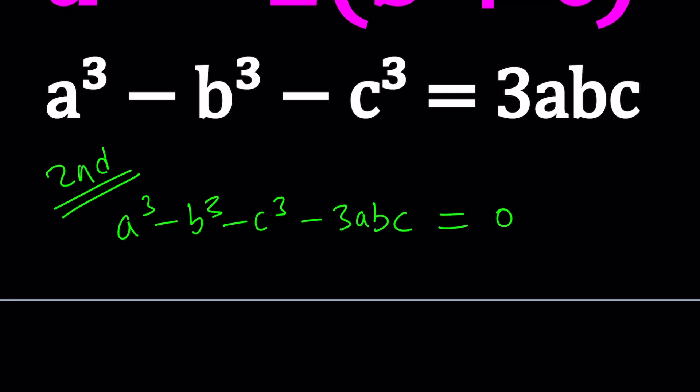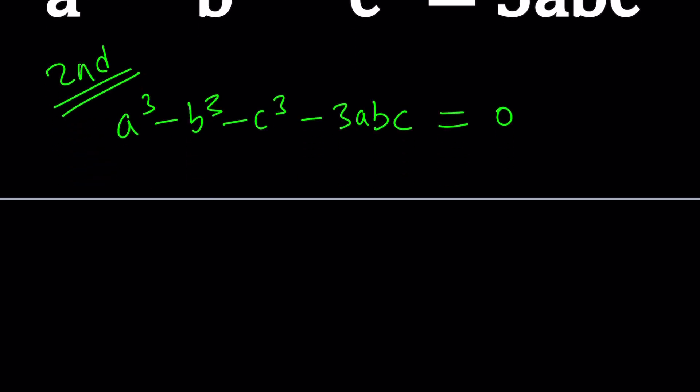I'd like to get 0 on one side. Now, this expression is factorable. Can you believe that? Why? Let me tell you. There's actually a nicer form of this, which with slight modifications you can get this. Here's the original version: x cubed plus y cubed plus z cubed minus 3xyz is factorable.